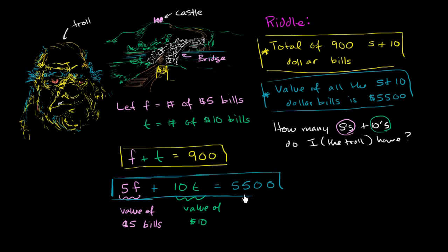So the second statement we can represent mathematically with this second equation right over here. And what we essentially have right over here, we have two equations. Each of them have two unknowns. And just using one of these equations, we can't really figure out what f and t are. You can pick a bunch of different combinations that add up to 900 here. You could pick a bunch of different combinations where if you work out all the math, you get $5,500 here.